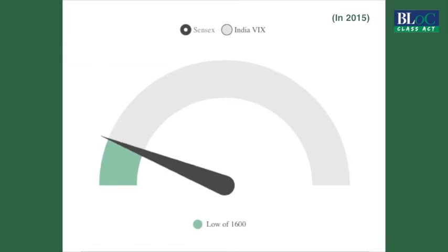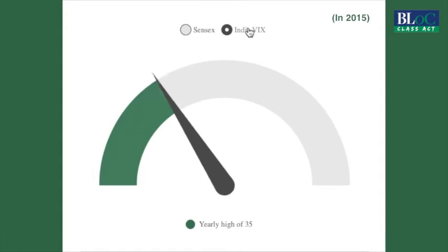In fact, on the day the Indian stock exchange saw a 1,600-point fall in the Sensex, the very next day the VIX hit its yearly high of 35 and above. Thereafter, it has been a downhill journey for the index.